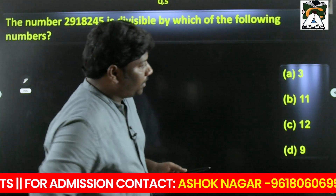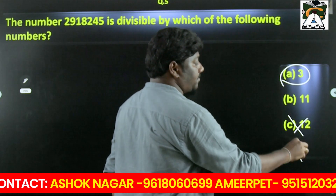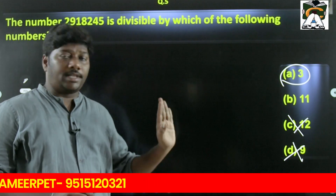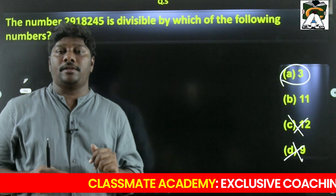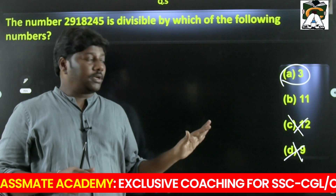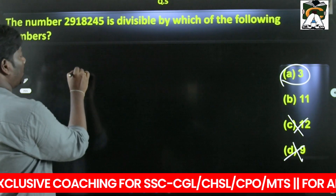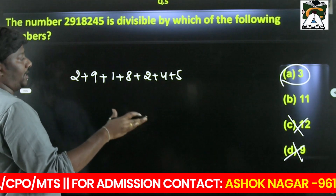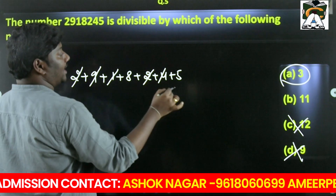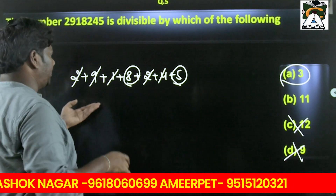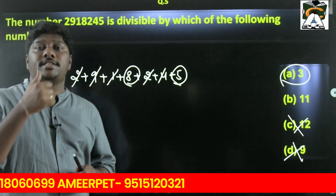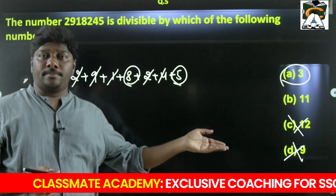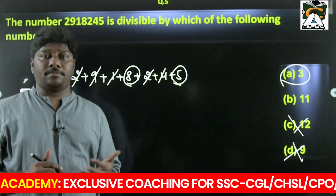Another question: a number is divisible by which of the following? If 3 is among the options, then 9 and 12 cannot be answers — if a number is divisible by 9 it is automatically divisible by 3, same for 12. So possible options are only 3 and 11. Check digit sum: 2+9+1+8+2+4+5 — cancel groups that sum to 3, leaving 13, which is not divisible by 3. So without checking 11 separately, by elimination the answer must be 11.